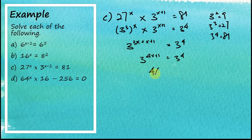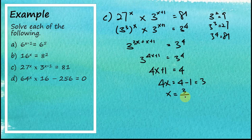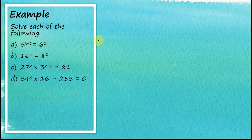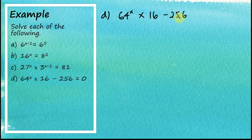Therefore 4x equals 3 and x equals three over four. For the last question, d: 64 to the power of x times 16 minus 256 equals zero. Again, the unknown is in the exponent, so we need to make the bases the same.